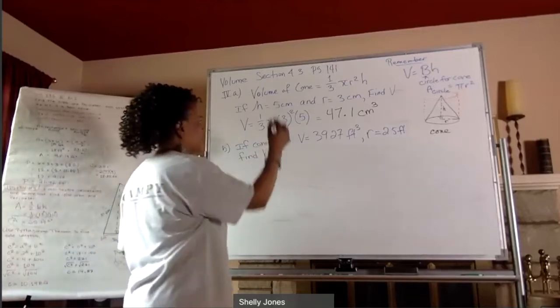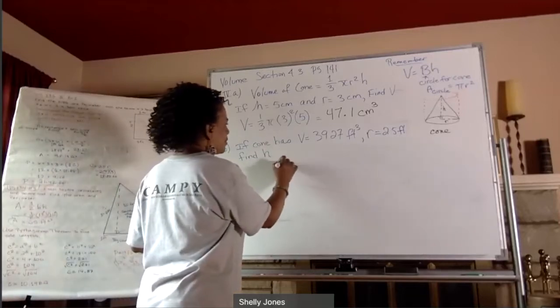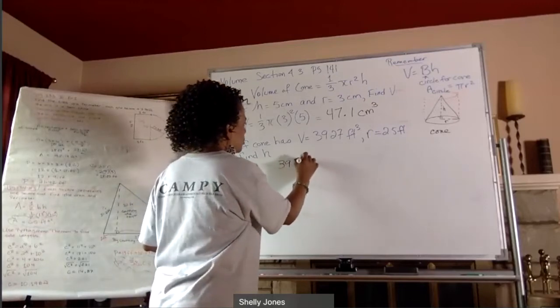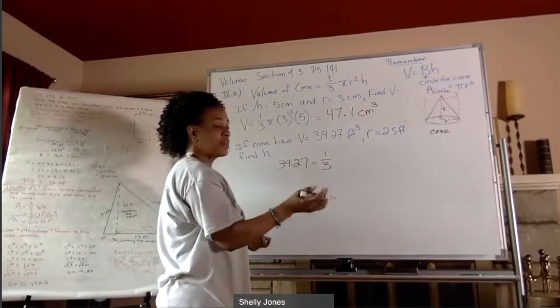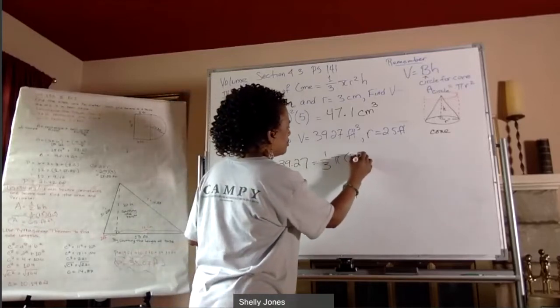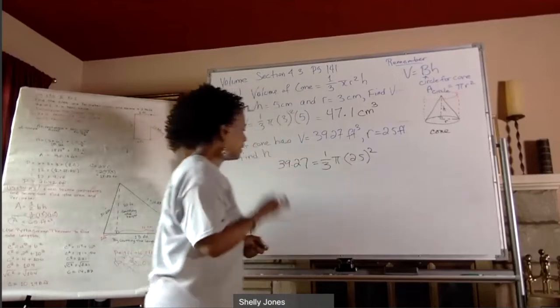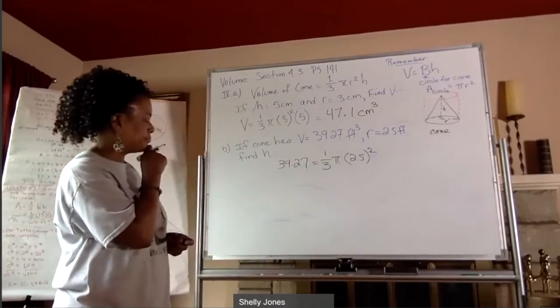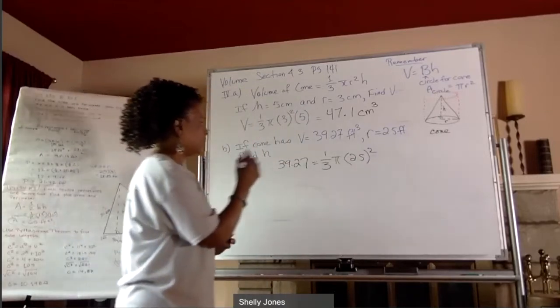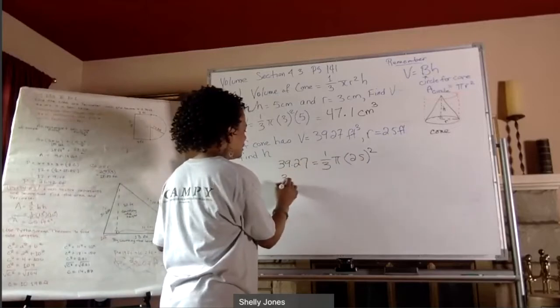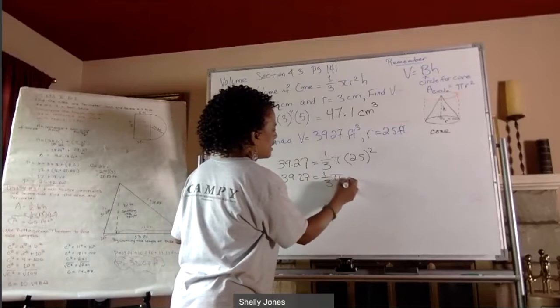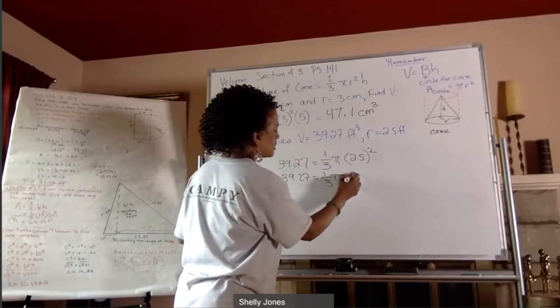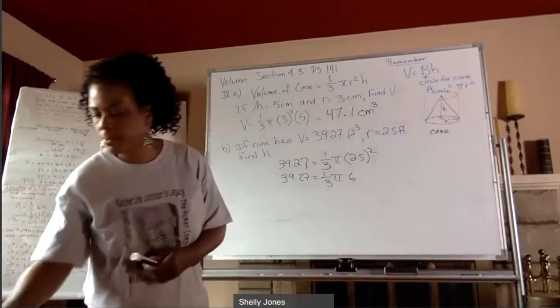Well, again, I'm going to use the same formula. The volume 39.27 is equal to one third of pi r squared. So pi, the radius is 2.5 squared. All right, so let's see, I can do this one out. 39.27 equals one third of pi, 6.25 I think. 2.5 squared is 6.25.